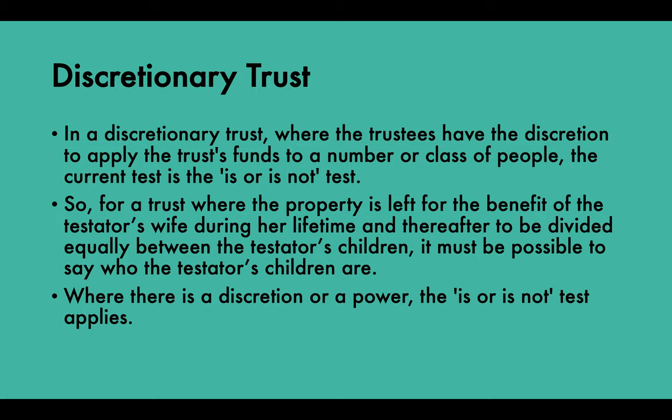The test applied to determine certainty of objects depends upon the nature of the trust. The court is more flexible in upholding discretionary trusts. For a trust where property is left for the benefit of the testator's wife during her lifetime and thereafter divided equally between the testator's children, it must be possible to say who those children are. Where there is a discretion or a mere power, the 'is or is not' test applies.